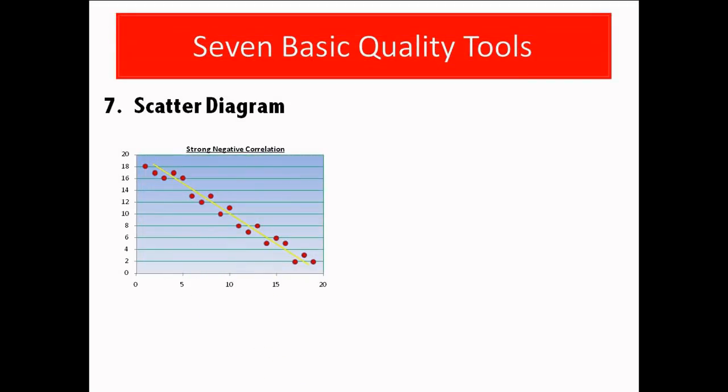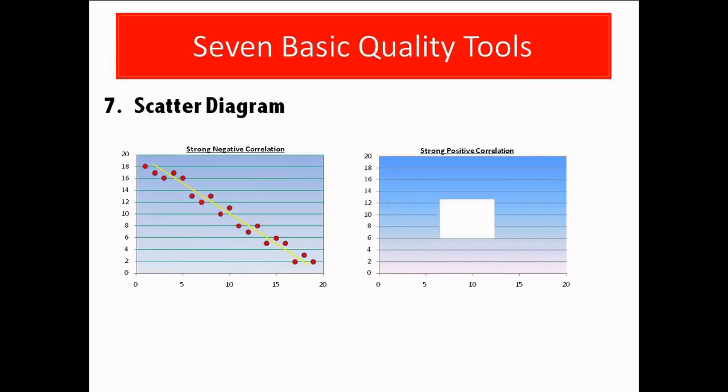This is a scatter diagram with a strong positive correlation. This scatter diagram represents a strong negative correlation.